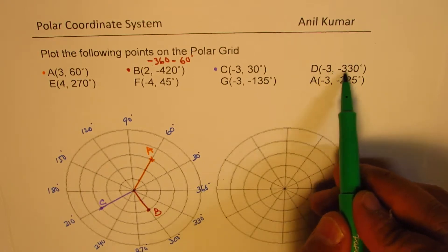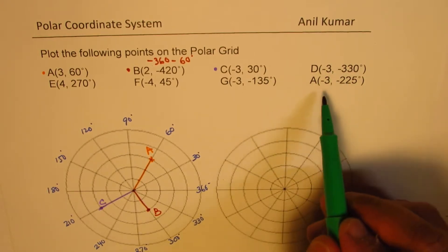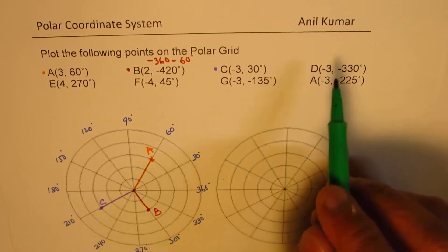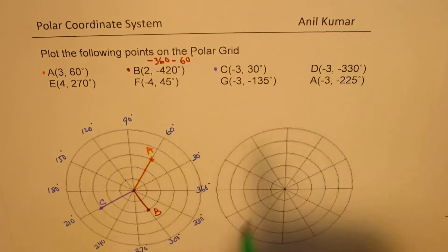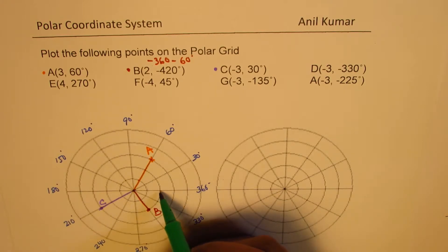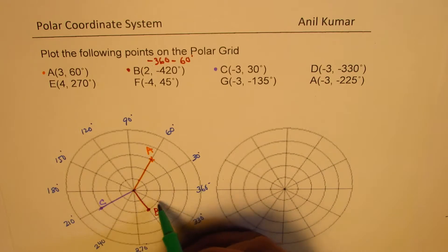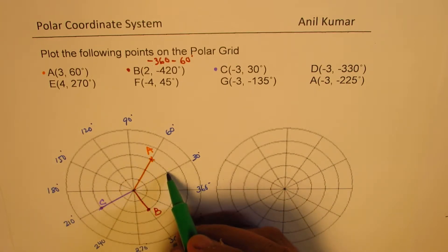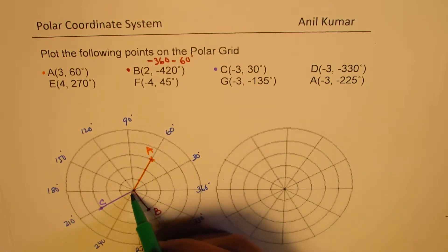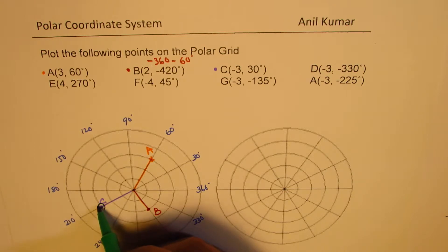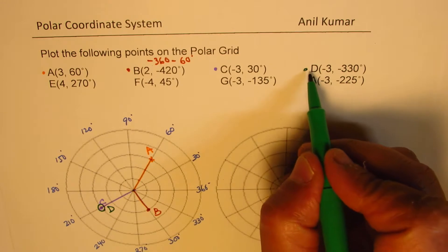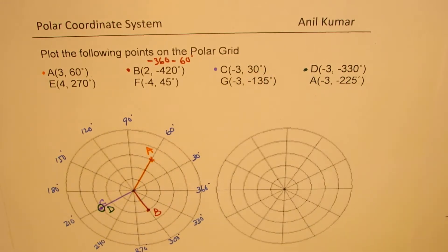In the next example, both r and the angle are negative: (-3, -330°). When I say minus 330, we have to go in the clockwise direction. So minus 270, 300, 330 brings us here, and since r is also minus 3, we don't go in that direction 3 units — we go in the opposite direction: 1, 2, 3. So that point here is D. D and C are actually the same points.